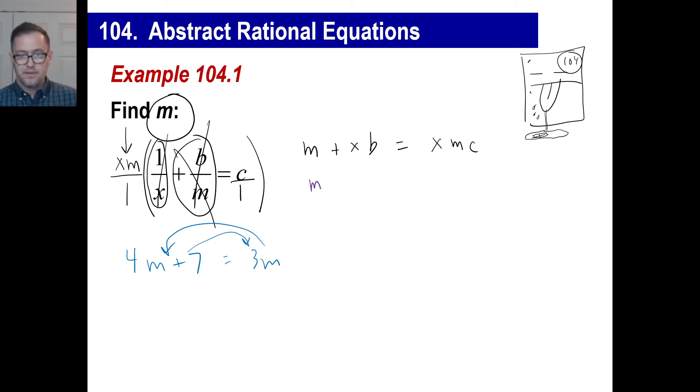Okay, so m, this m stays there. This xmc, there's an x, I mean, there's an m in there, so get it out of there. So it's going to come over here. It becomes negative xmc. This xb, get it out of there. It's out of the way. It's over here, negative xb.